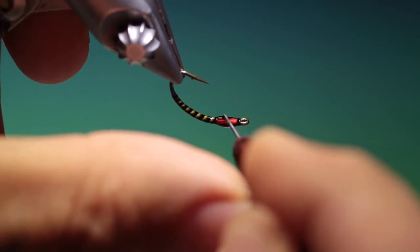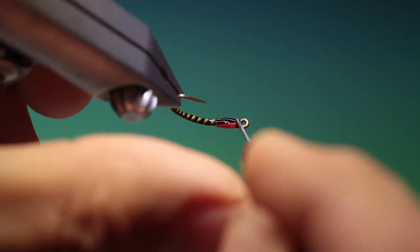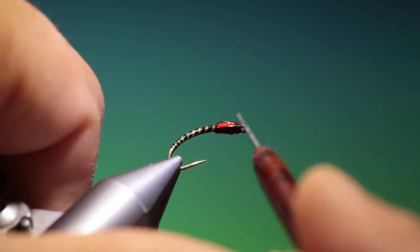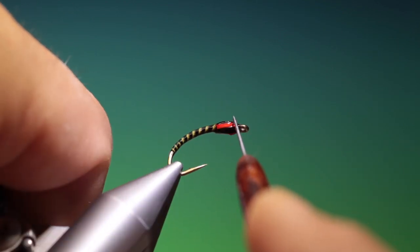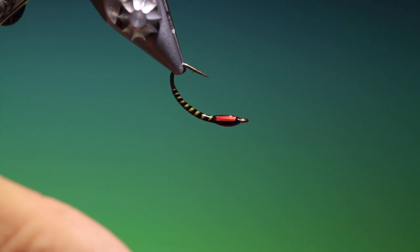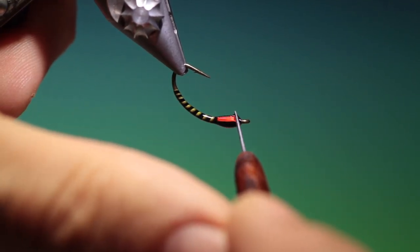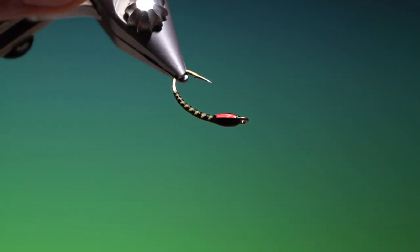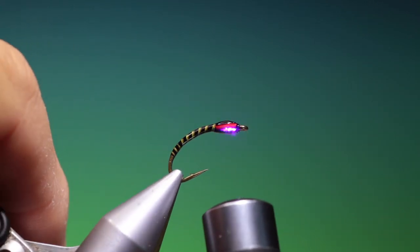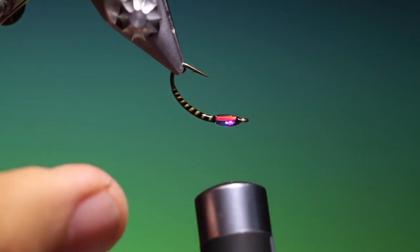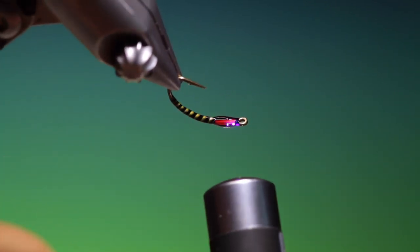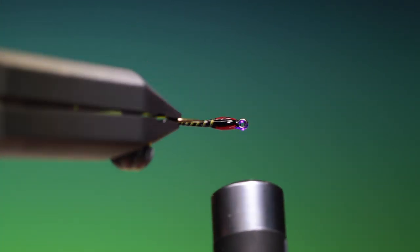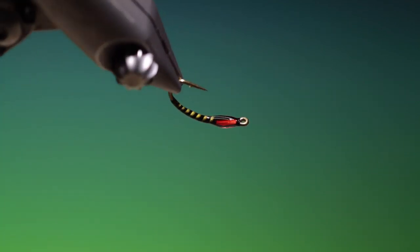We want a drop underneath, not much. Little on the sides, on the wing buds. Cure it, and that is the finished yellow quill buzzer.